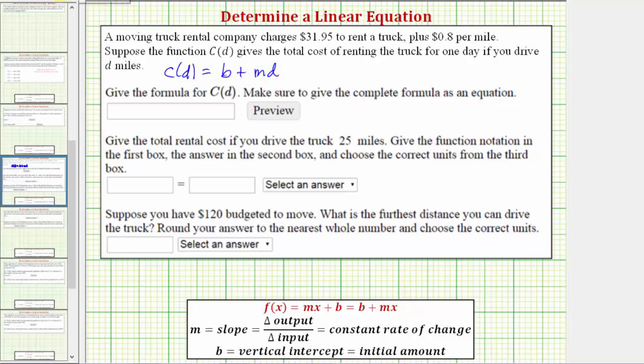From here, because the fixed cost to rent the truck is $31.95, this is the initial cost, and therefore b = $31.95. And because the total cost is increasing at a rate of $0.80 per mile, the constant rate of change, m = $0.80 per mile.